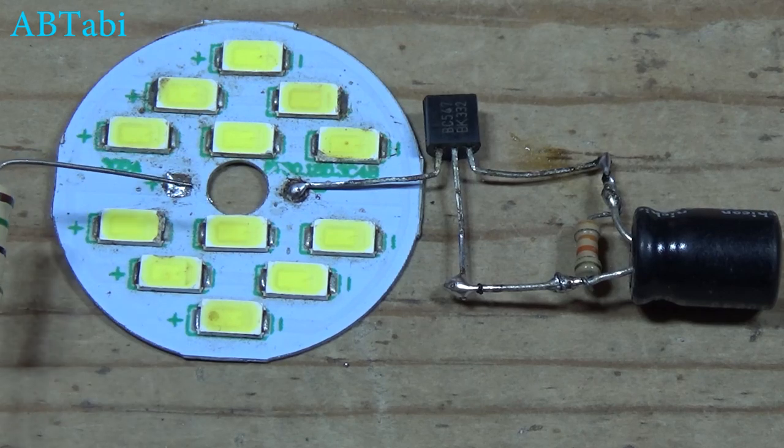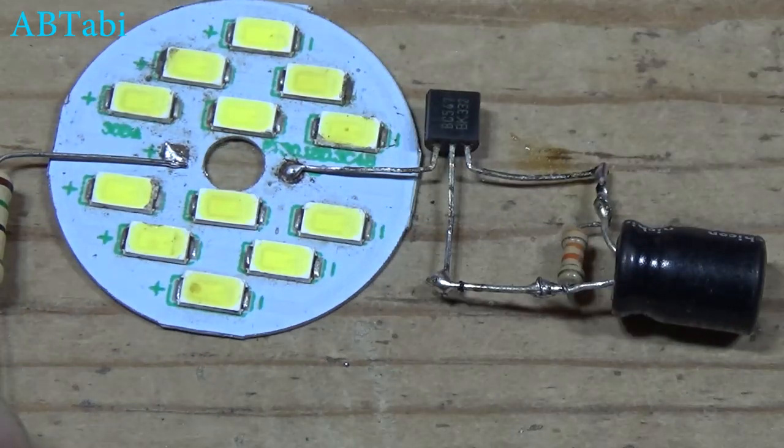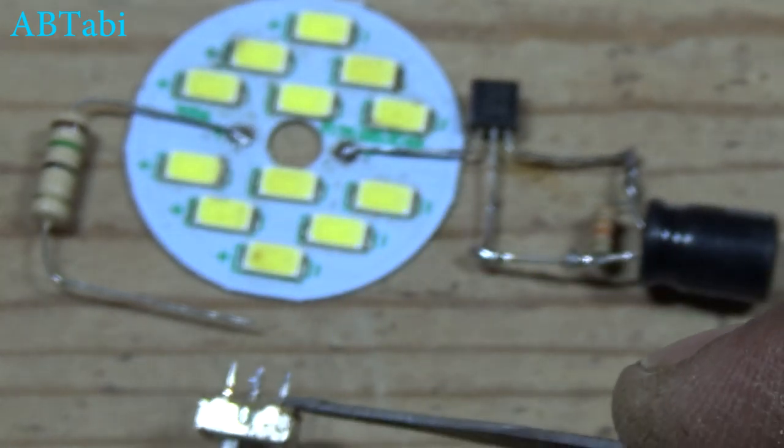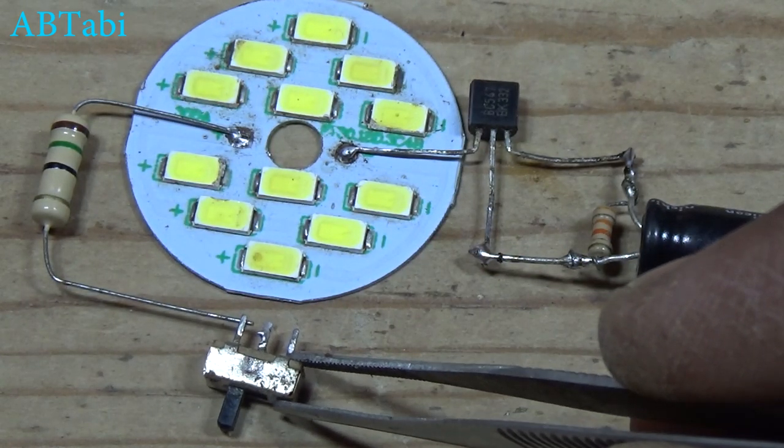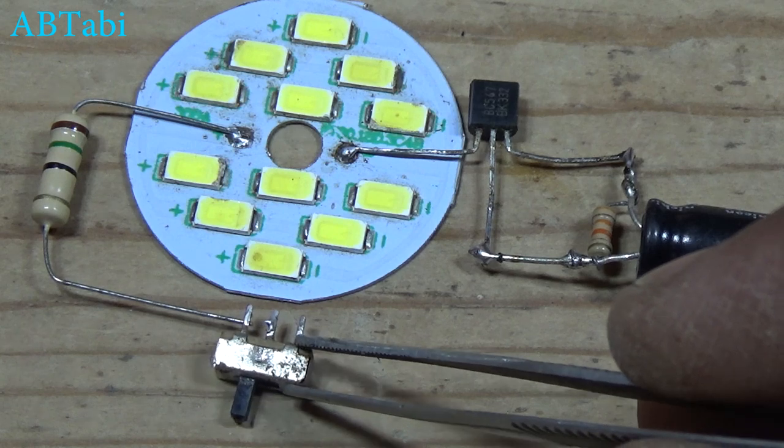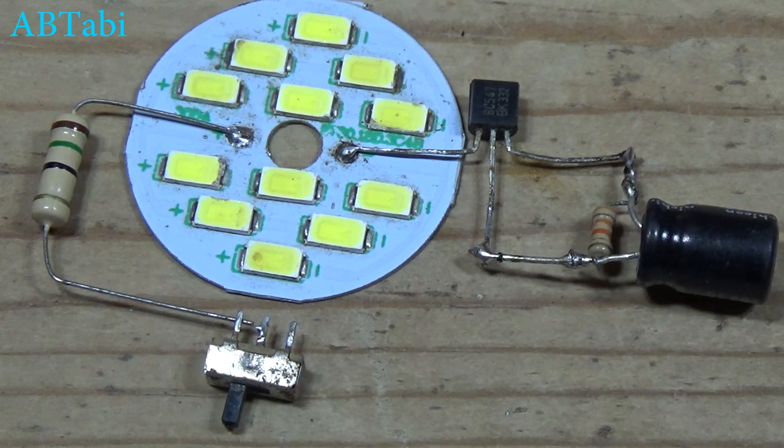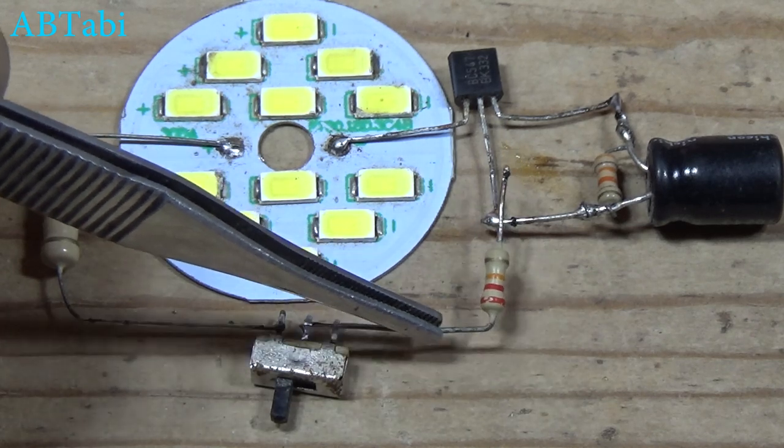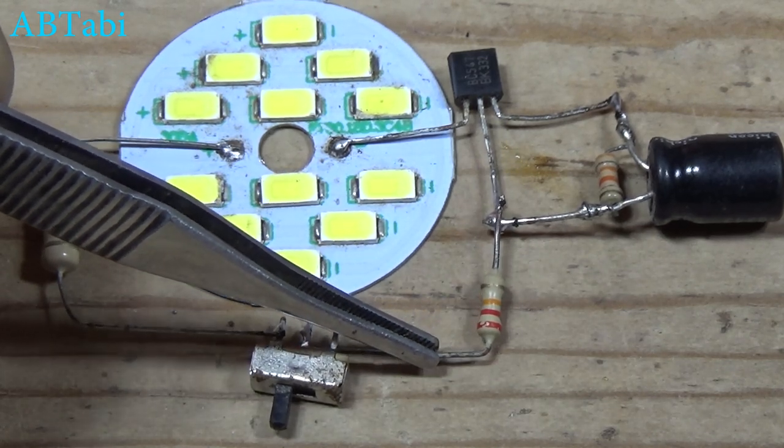15 ohms 1 watt resistor connects with LED positive side. Add on off switch. Switch one side connects with 15 ohms resistor, and 22k resistor connects with switch second side to transistor base.